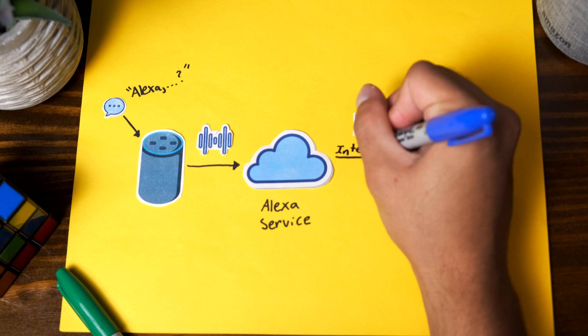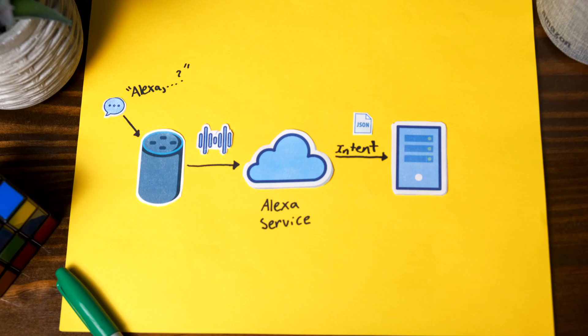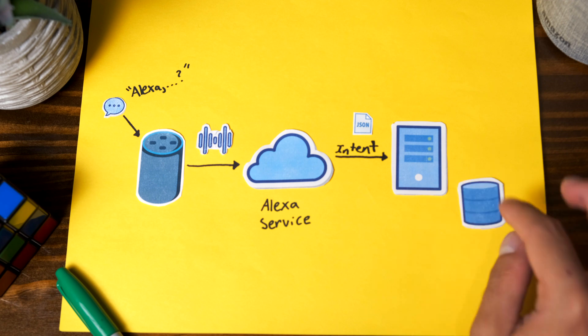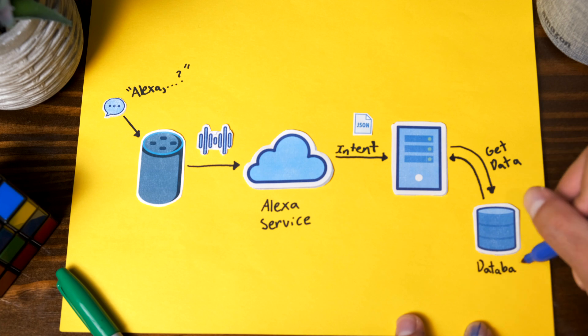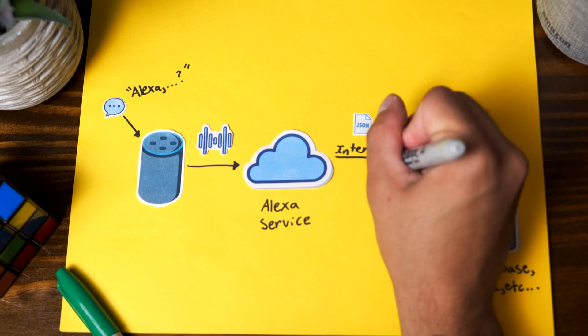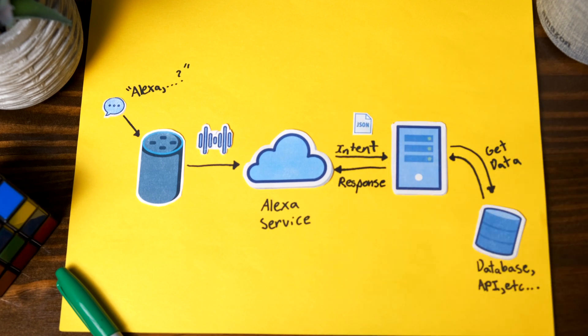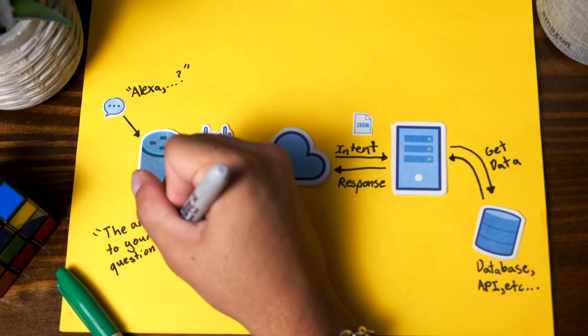This JSON object is called an intent, as it details the user's intention — whatever they were asking or looking for. Whenever this web server receives this intent and recognizes what you're asking for, it then goes to look for that data, usually from an external data source like a database or an API. It then processes that data however necessary and sends a response back to the Alexa service in JSON format, detailing what the Alexa speaker should say back to the user. The Alexa service converts any necessary text back to audio, sends that to the speaker, and then you can hear whatever the response is.